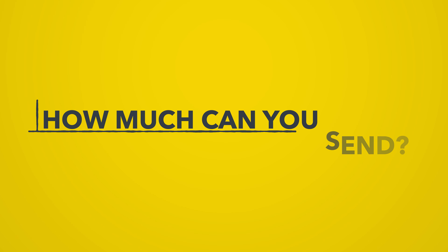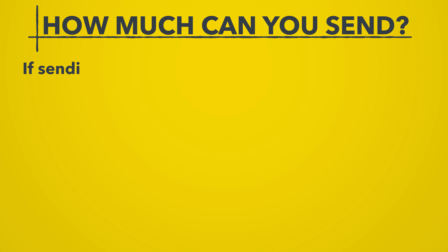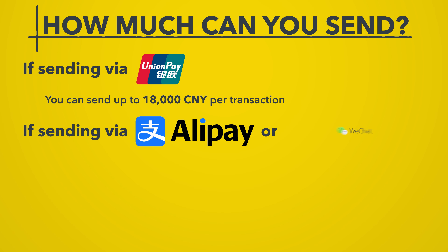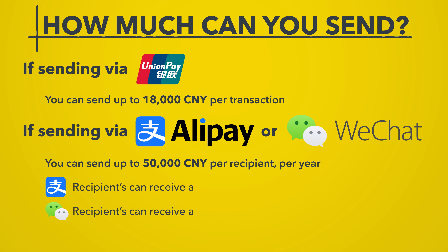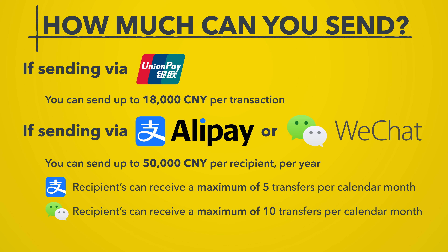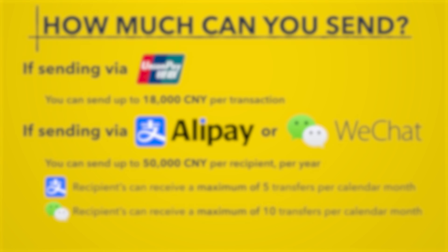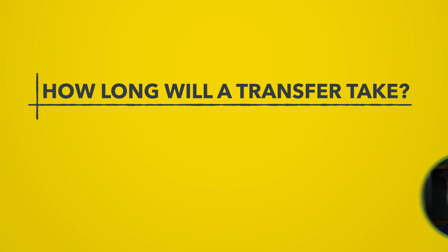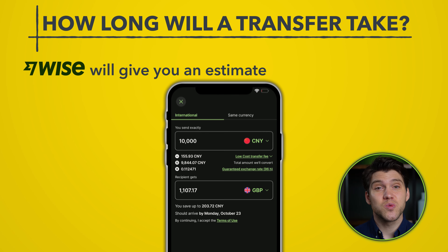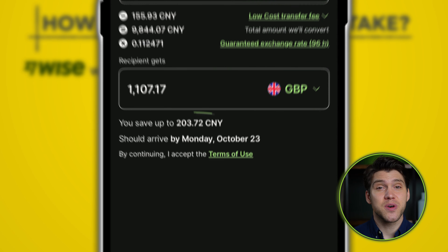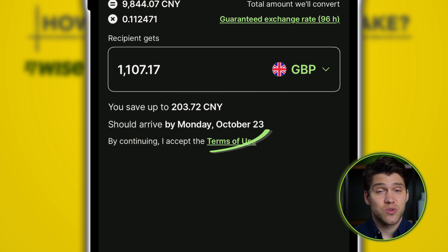The maximum amount you can send varies. For UnionPay it's up to 18,000 CNY, and Alipay or Weixin allow up to 50,000 CNY. These two providers also have a receiving limit of 5 and 10 transfers per calendar month respectively. The estimated time for your transfer largely depends on the transfer method you choose, and WISE will give you an estimate of how long it will take.